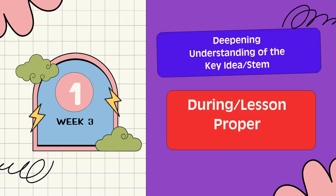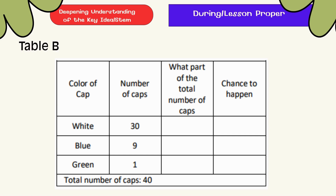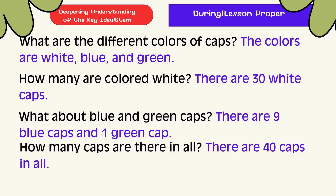Deepening understanding of the key idea — Table B. What are the different colors of cups? The colors are white, blue, and green. How many are colored white? There are 30 white cups. What about blue and green cups? There are 9 blue cups and 1 green cup. How many cups are there in all? There are 40 cups in all.